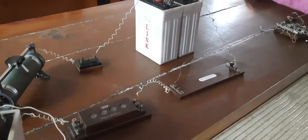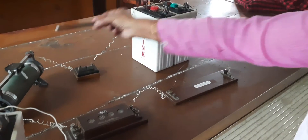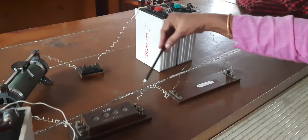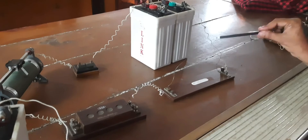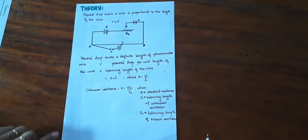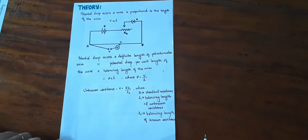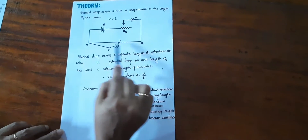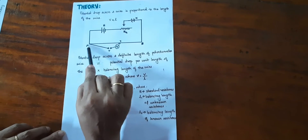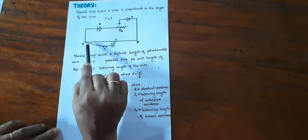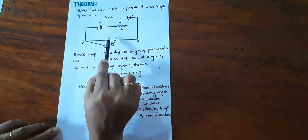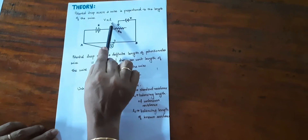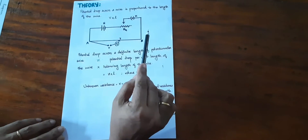This battery will make a current flow through the circuit, and the rheostat will help you to adjust the resistance in the circuit and thereby adjust the current flowing. Now coming to the theory of the circuit: when a current flows through a wire, let AB be our experimental wire, then the potential drop across the wire is proportional to the length of the wire. V is proportional to L. This is the basic principle of the potentiometer.